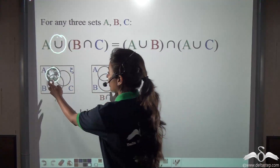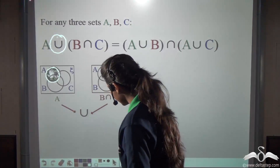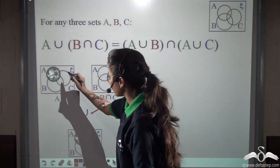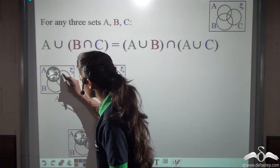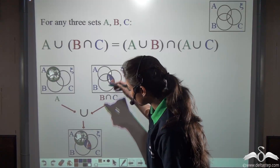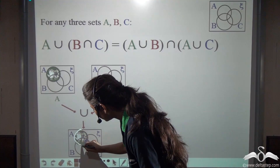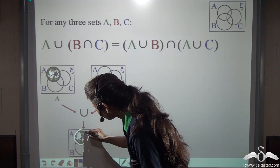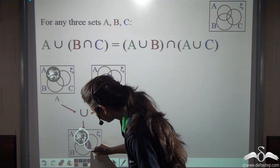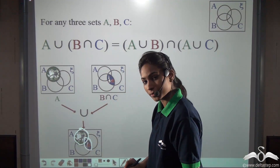So making these two together, what do we get? We get this plus this — that means this shaded region is what we want: A union (B intersection C).